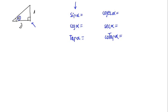The cosecant, the secant, and the cotangent are the inverse functions of the sine, the cosine, and the tangent.